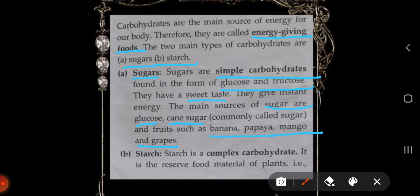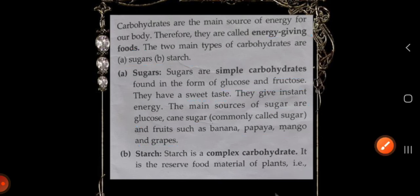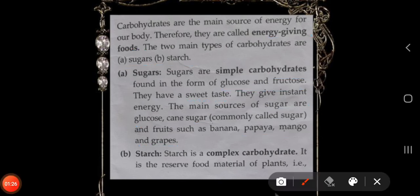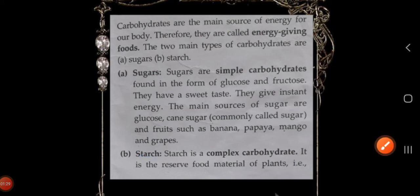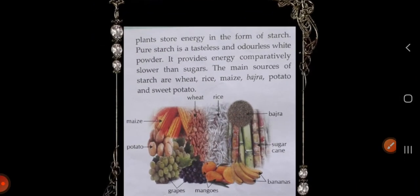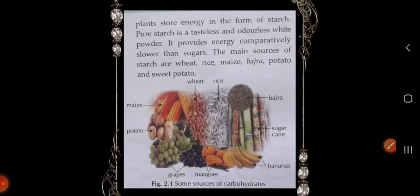Next we have starch. Starch is a complex carbohydrate. It is a reserved food material of plants. Plants store energy in the form of starch. Pure starch is a tasteless and odorless white powder. It provides energy comparatively slower than sugars. The main sources of starch are wheat, rice, maize, bajra, potato, and sweet potato.